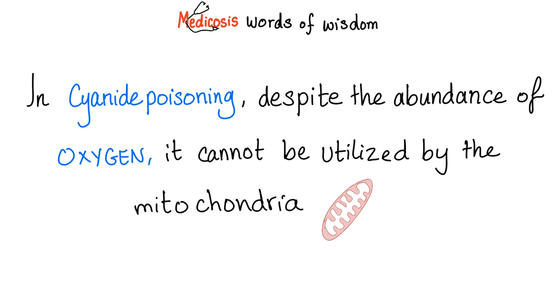That's why in cyanide poisoning, PaO2 — the partial pressure of oxygen in the artery — equals PVO2, the partial pressure of oxygen in the vein. Despite the abundance of oxygen, it cannot be utilized by the mitochondria, so it ends up in the vein.